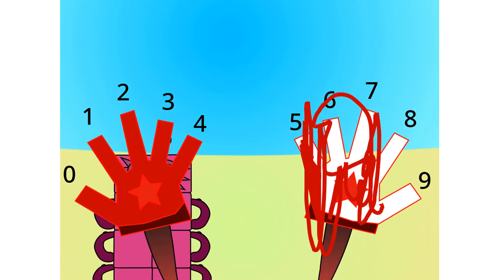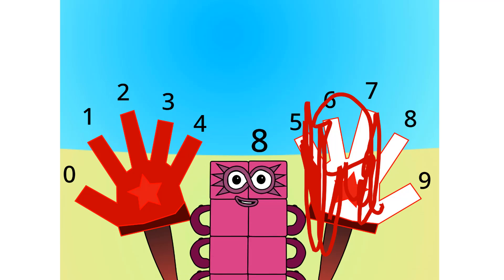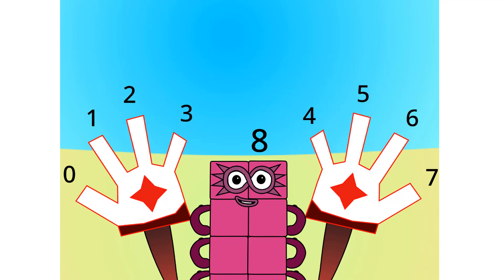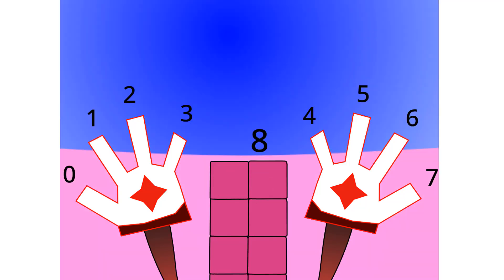As Dan said, humans count with base ten out of all bases because they have ten fingers — five on two hands. But what if humans had eight fingers? Things will change a lot. As you can see, cartoon characters like Mickey Mouse have four fingers on each hand. We call this base eight, or octal.